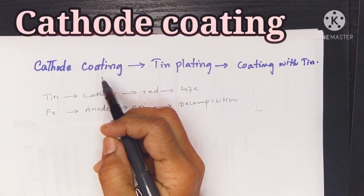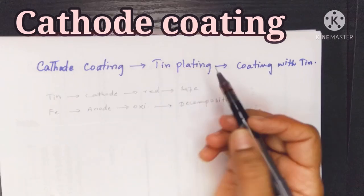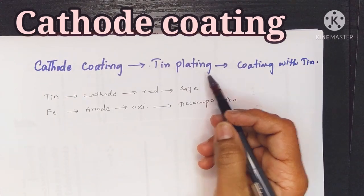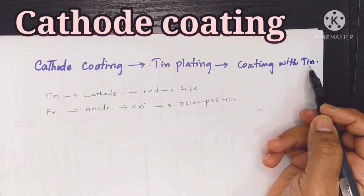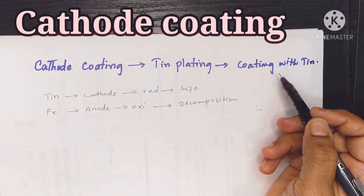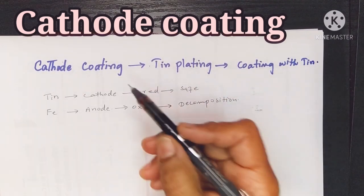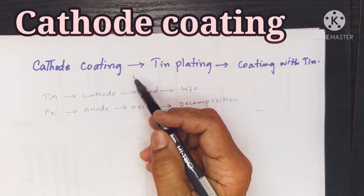Anode coating also means tin plating, coating with tin. However, we use cathode coating as well.